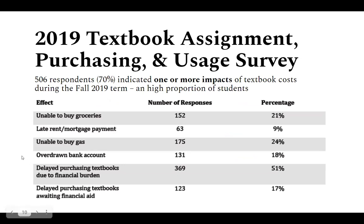One thing I found very interesting in terms of responses from our survey: 70 percent of all survey respondents — equating to about 506 students — indicated that they had experienced one or more impacts from a list of potential impacts that textbook costs incurred during the Fall 2019 term. That's a very high number, including things like: 21 percent reported inability to buy groceries, some were late on rent or mortgage payments, some unable to buy gas, some overdrew bank accounts. About half of all respondents said they delayed purchasing textbooks due to the financial burden, and about 17 percent said they delayed because they were awaiting financial aid.